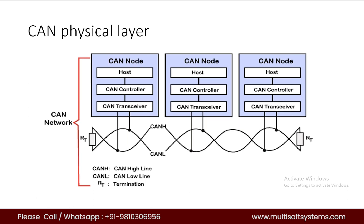The host decides what the received message means and what message it should send next. The CAN controller handles the communication functions described by the CAN protocol — it also triggers transmissions and receptions of messages. The CAN transceiver is responsible for the transmission or reception of data on the bus. It converts the signal into a stream of data that is easily understandable by the CAN controller. There is also a twisted pair cable in the diagram, with termination resistors applied. This cable is used to transmit or receive data and is known as the CAN bus.